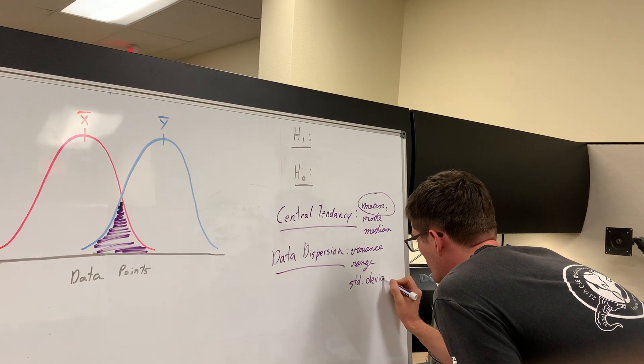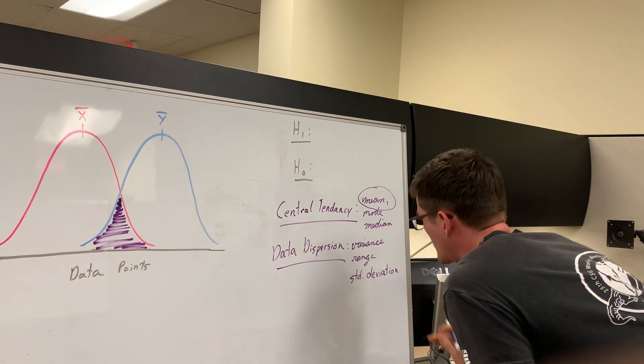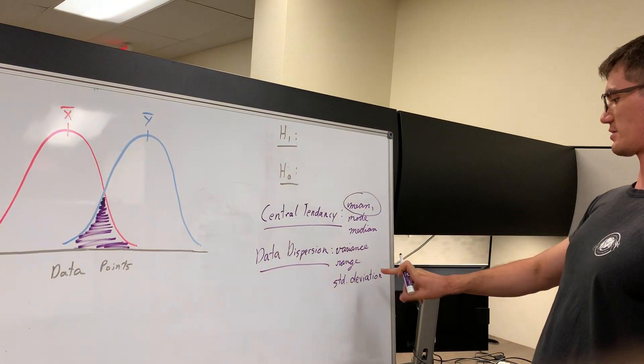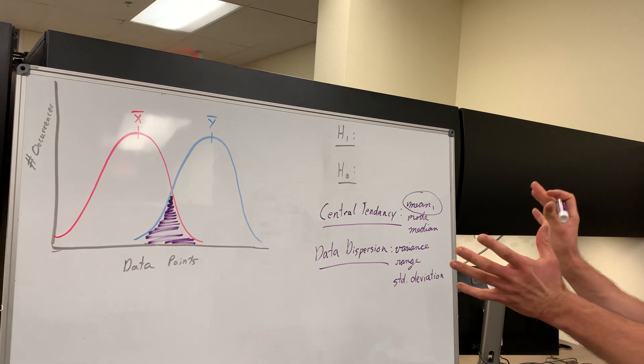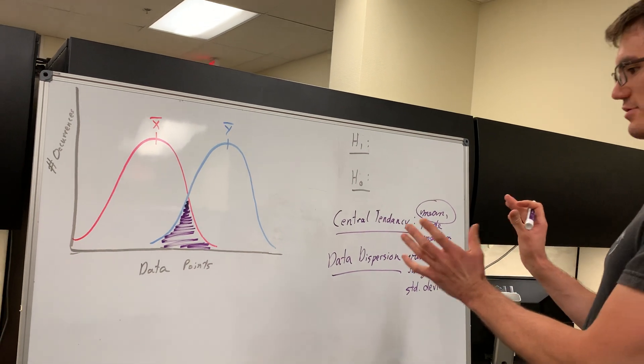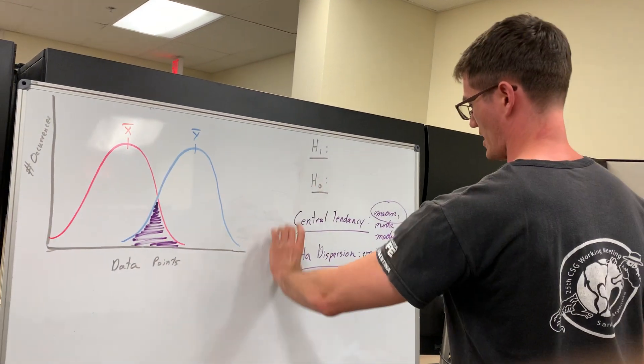Those of you who have taken stats before know the standard deviation is actually the square root of variance. But basically, the point I want you to take away from this is that your t-test is measuring both of these.